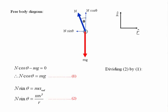If we now divide equation 2 by equation 1, we get that tan theta is equal to v squared over Rg.